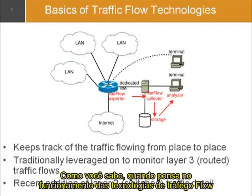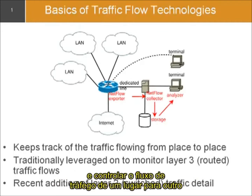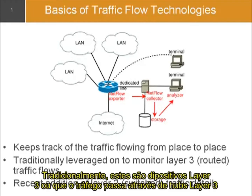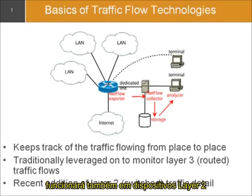When you're thinking about how traffic flow technologies work, basically what NetFlow does is it runs on your routers and switches and keeps track of the traffic flowing from place to place. Traditionally this is on layer 3 devices or traffic traversing layer 3 hops, but some newer devices, like some of the new Cisco switches, will also do it on layer 2 devices.